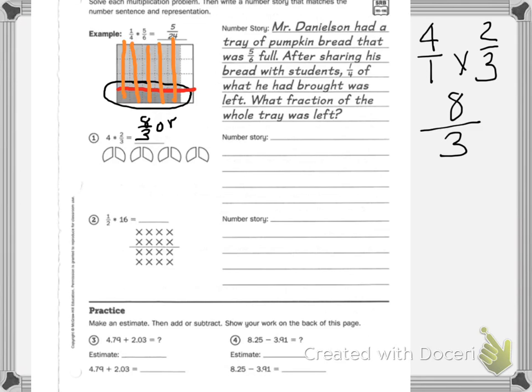3 goes into 8 two times, which leaves me 6. 8 minus 6 equals 2, so I have 2 thirds left, making it 2 and 2 thirds. Now it asks you to write the number story.